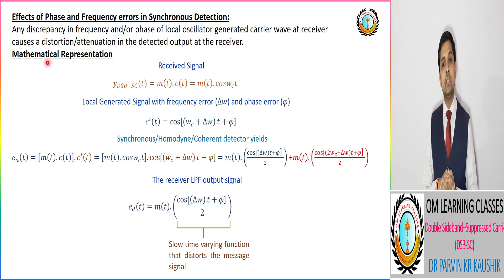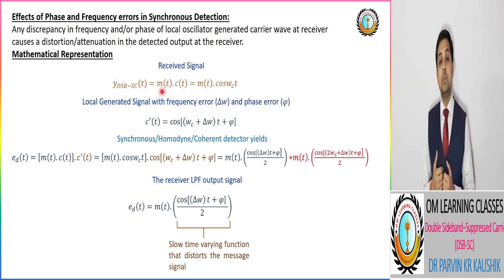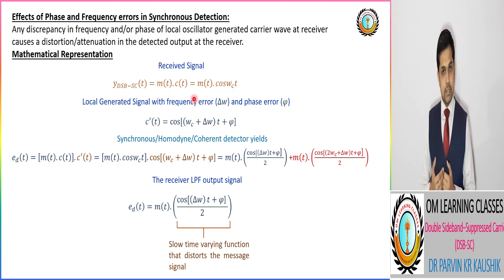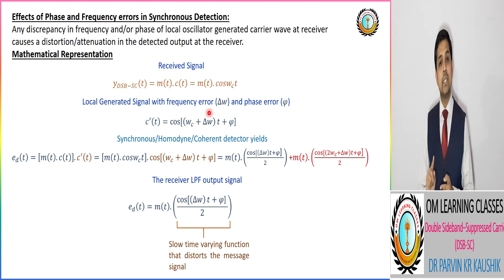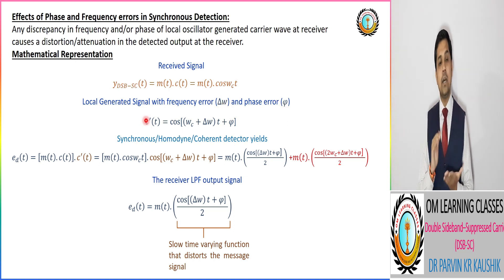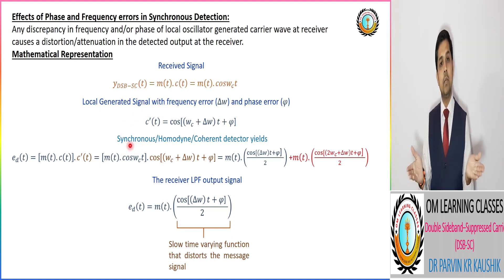Mathematically, the received DSB-SC modulated signal is m(t)·cos(ωc·t). We then take the locally generated signal that has a frequency error corresponding to Δω and a phase error corresponding to φ. As per the synchronous detector, we multiply both signals using a product modulator.